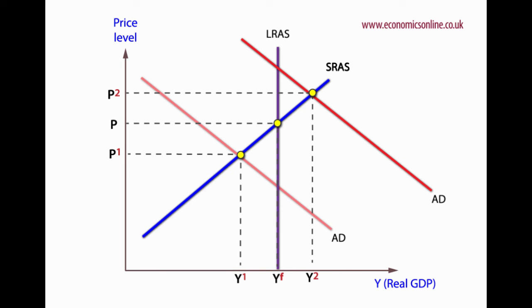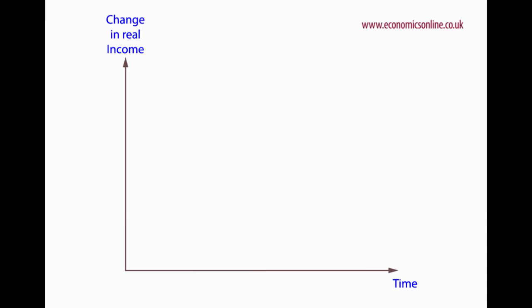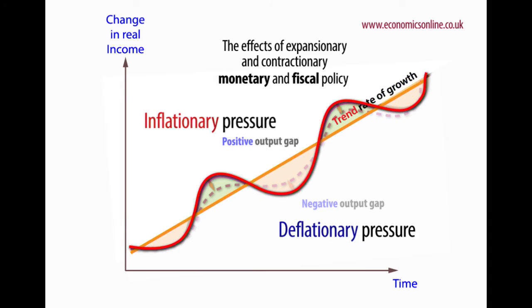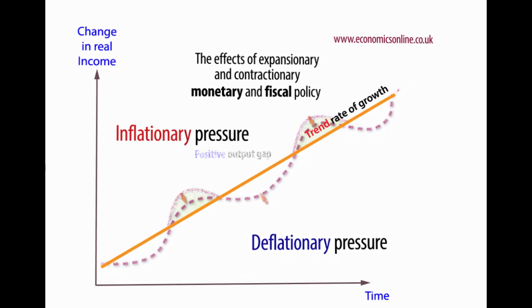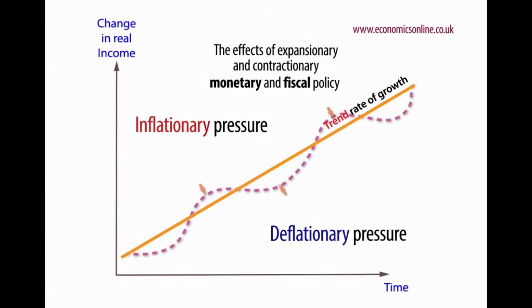Positive and negative output gaps can also be looked at by comparing actual output with the trend rate of growth. If demand exceeds the trend, there will be inflationary pressure, and if demand is less than capacity, deflationary pressure will exist.